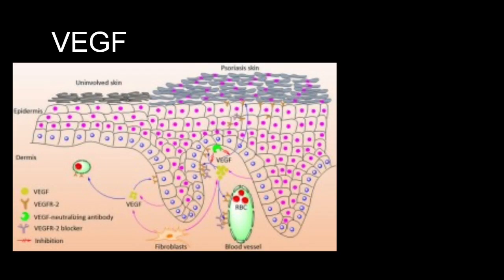Finally, angiogenic factors secreted by keratinocytes play a role in abnormal dermal vascular proliferation and angiogenesis. Levels of vascular endothelial growth factor (VEGF) are raised in psoriatic plaques.